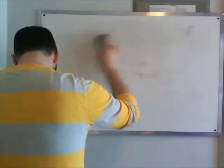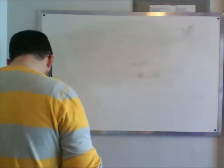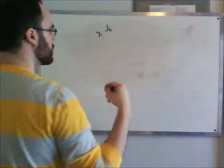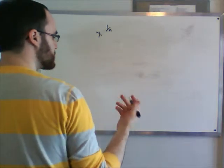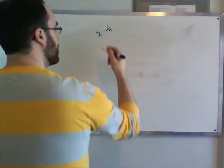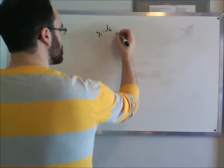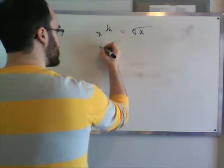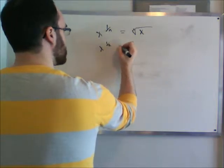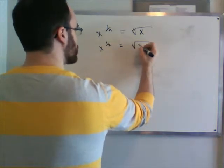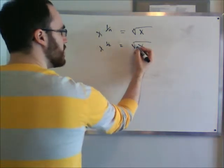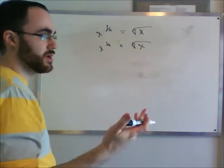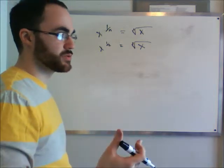Now let's talk about radicals. A radical is when you have x to the 1 over n — so something like x to the 1 third or x to the 1 half. x to the 1 over n becomes the nth root of x. If you have x to the 1 half, that becomes the square root of x, since the index for square root is 2. The cubic root would be 3 times 3 times 3, which is 27.